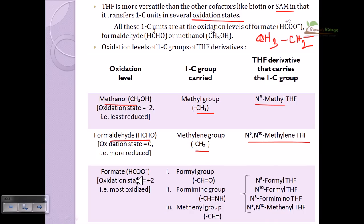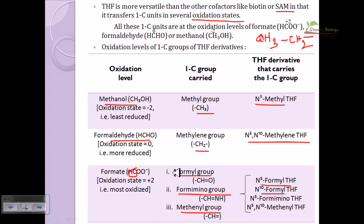Formaldehyde can transfer a methylene (CH2) group attached at both N5 and N10, forming methylene-tetrahydrofolate. Formate (HCO2−) contributes a formyl group, and carbon from formate can be carried as formyl, formimino, or methenyl groups. These can be attached at either N5 or N10 positions, giving derivatives like N5-formyl-THF and N10-formyl-THF.